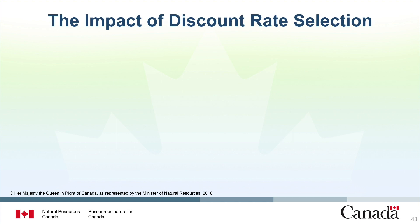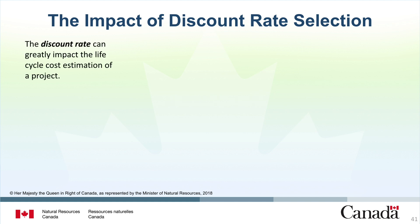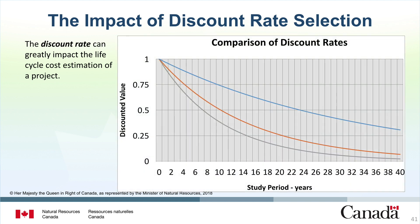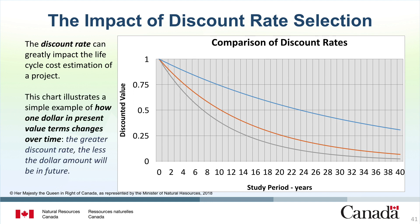Let's move on from calculating present value by discussing the impact of discount rate selection. The discount rate can greatly impact the lifecycle cost estimation of a project. For federal projects, the discount rate is normally between 2 and 3%. This value is calculated based on the economic conditions for a given year and will change over time — be sure to check with your department about the appropriate discount rate to use. This chart illustrates how $1 in present value terms changes over time. In year 7, $1 is equivalent to about $0.80 given a 3% discount rate, dropping to about $0.60 at a 7% discount rate and $0.50 at a 10% discount rate. The greater the discount rate, the less the dollar amount will be in future.